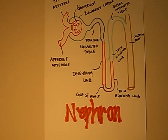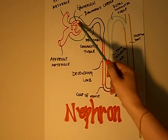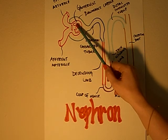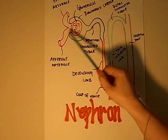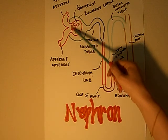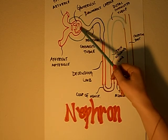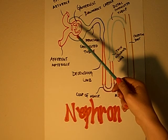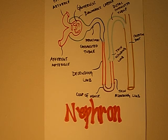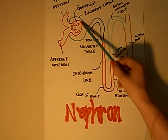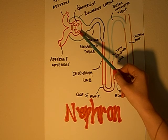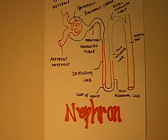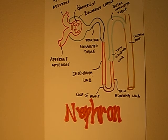Here we have the nephron. The afferent arteriole is where everything goes in to start with. Once the fluid and blood enter, they go into the glomerulus. The glomerulus and Bowman's capsule are responsible for the first step in urine formation. As blood flows through the glomerulus, pressure forces water and small molecules out into Bowman's capsule, leaving blood cells and proteins behind in the efferent arteriole.